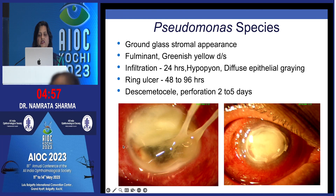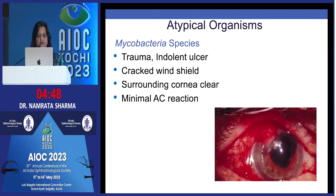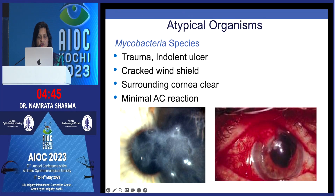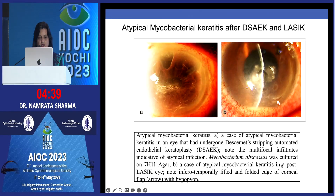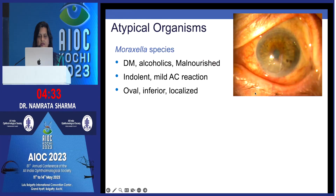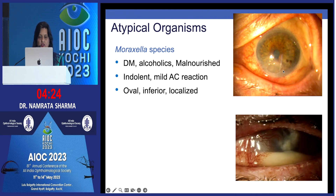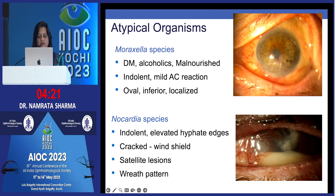Pseudomonas will have greenish discharge with hypopyon, diffuse epithelial graying, ring ulcer in 48 to 96 hours, and Descemet membrane perforation in 2 to 5 days. Mycobacteria has a cracked windshield-like appearance with a clear surrounding cornea and hardly any AC reaction — atypical mycobacterial keratitis can also occur after DSEK and LASIK. Moraxella tends to be inferior and oval in diabetics and alcoholics with hardly any AC reaction. Nocardia classically has a cracked windshield appearance and also a wreath-like or flower-like pattern.